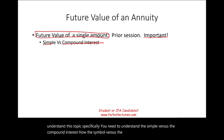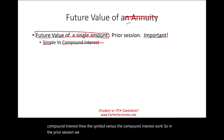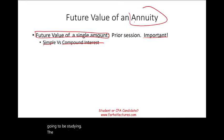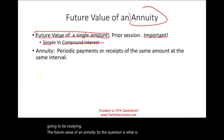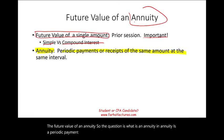In the prior session we looked at the future value of a single payment. Now we're going to be studying the future value of an annuity. So the question is: what is an annuity? An annuity is a periodic payment or receipt of the same amount at the same interval.